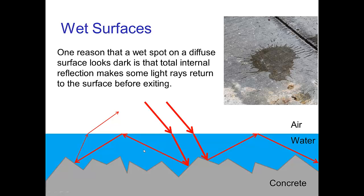This trapping means the rays have to reflect off the diffuse surface several times. Every time they reflect there's more absorption. When they finally make it back out, they've reflected off the concrete not once but multiple times, so there's more absorption and it appears darker.